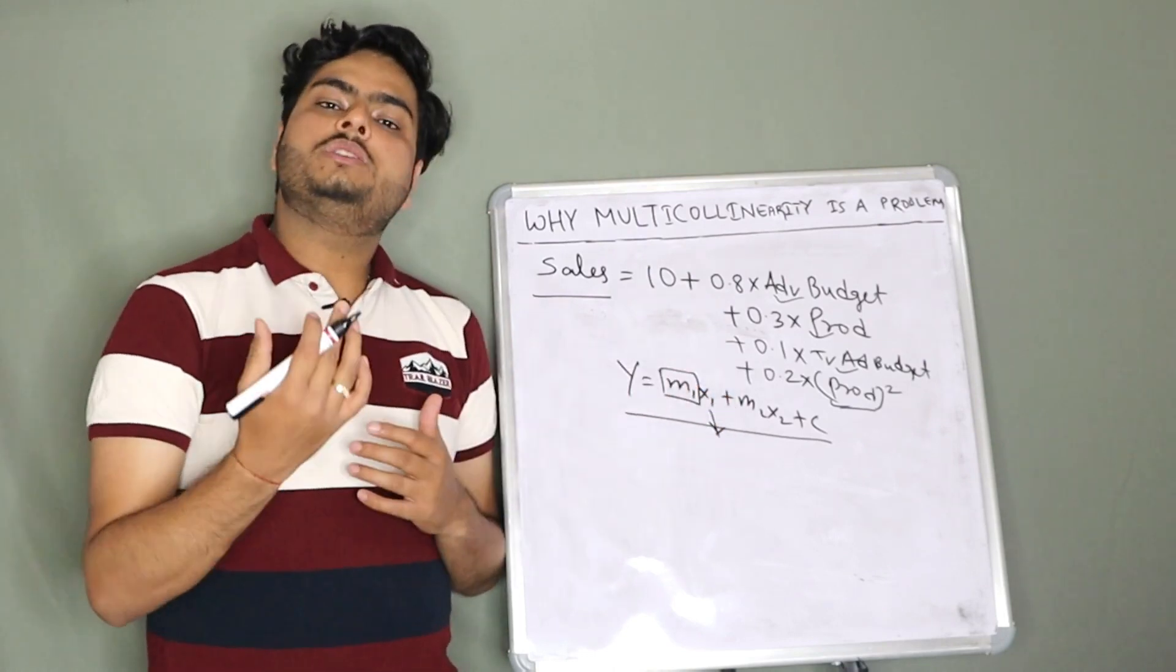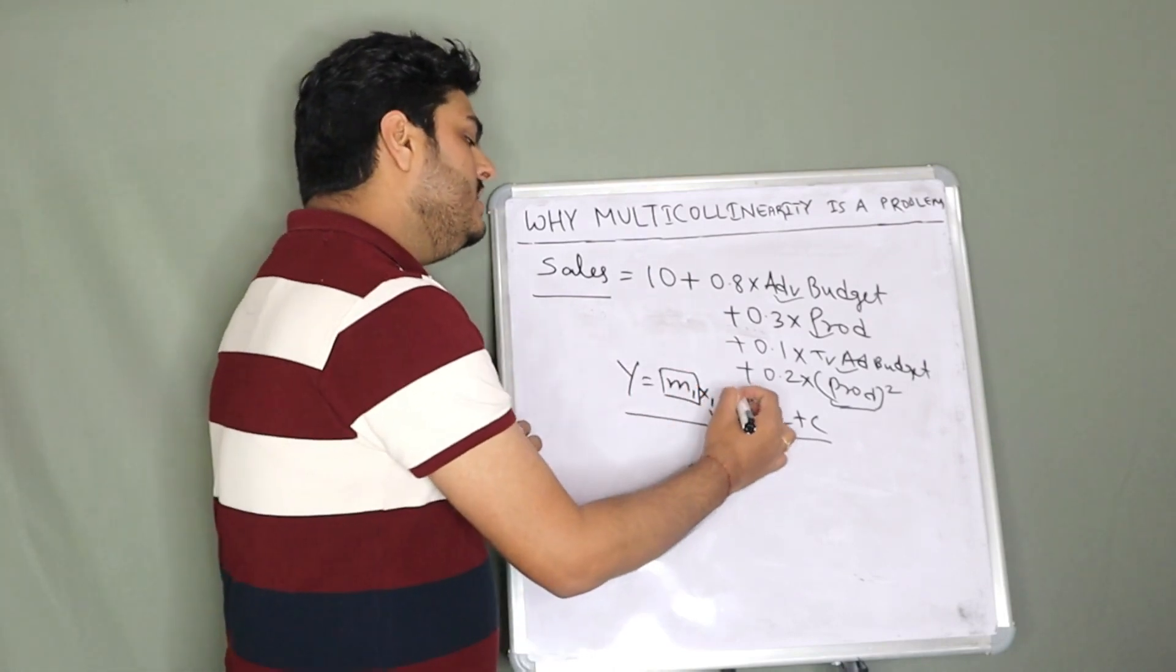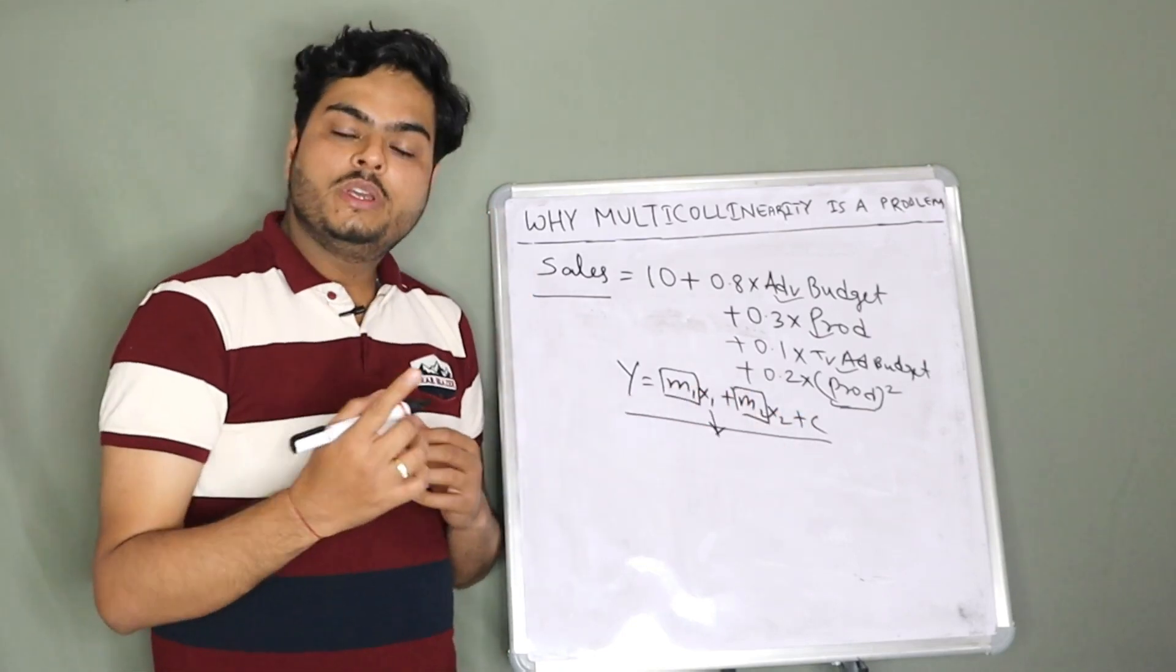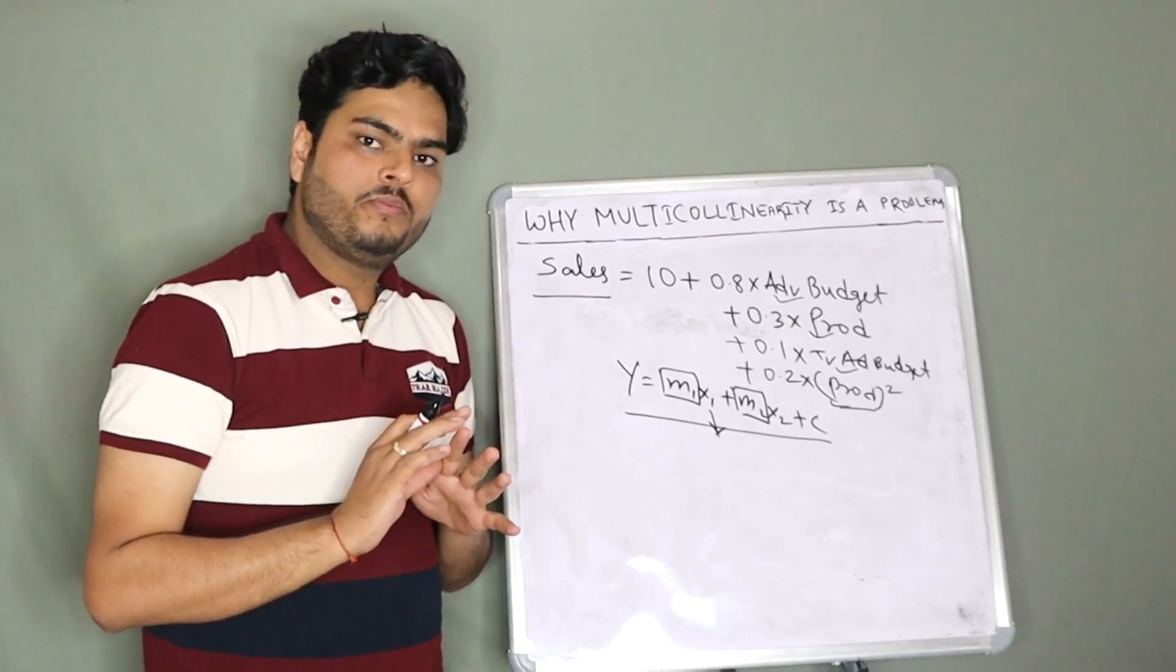If I ask you, what is the explanation for m2? You will tell me: for every unit shift in x2, y shifts by m2, keeping other variables constant.